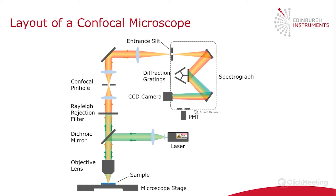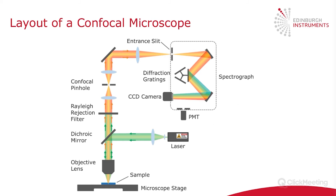There is also a second detector. The RMS 1000 can also function as a photoluminescence lifetime microscope using a single point detector — a photomultiplier tube — to measure photoluminescence lifetimes. Instead of imaging onto the CCD, the light can be directed through a slit and onto the PMT for lifetime measurements. I hope that gives a brief overview of how these instruments work, as I'll be referring to the various parts throughout the rest of the talk.